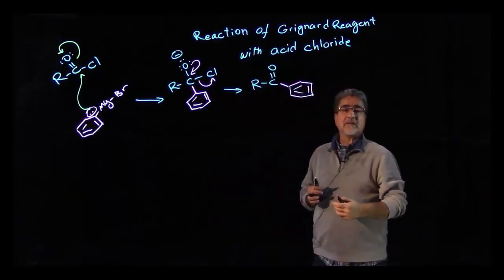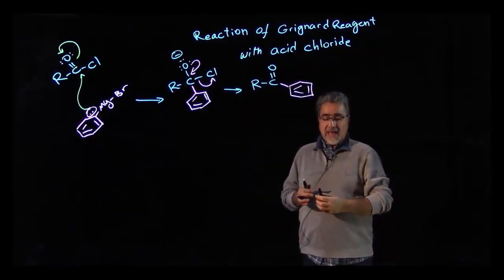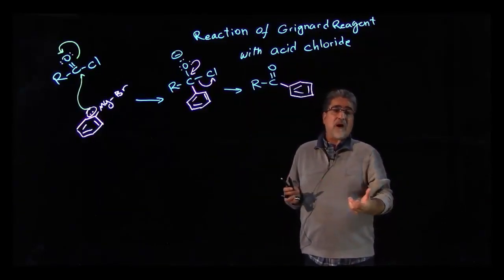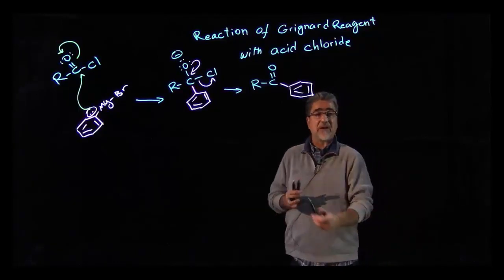So this is our first product that is formed. Again, it's a ketone and it has a carbonyl group. Another mole of Grignard reagent can react with this carbonyl, and I'm going to show that one with a green color.